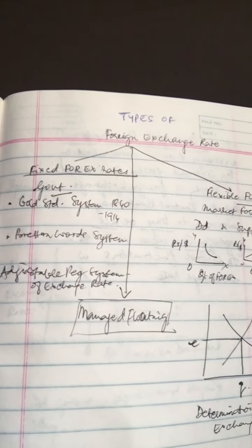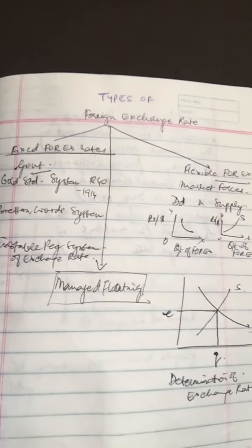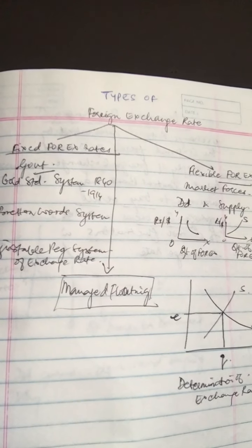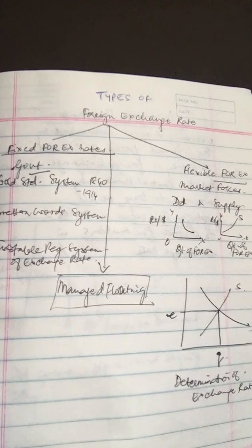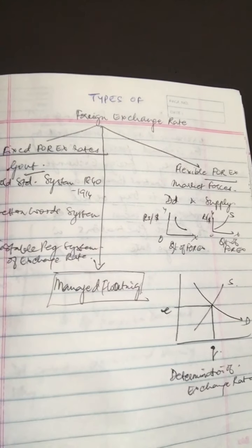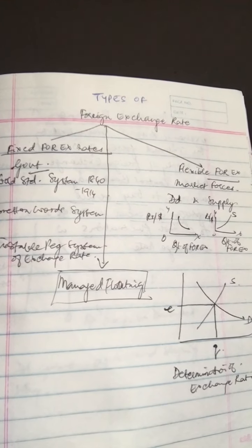If we have to pay 70 rupees for one dollar, then the exchange rate is 70 rupees to one dollar. So foreign exchange rate is the rate at which one currency can be converted into another currency.